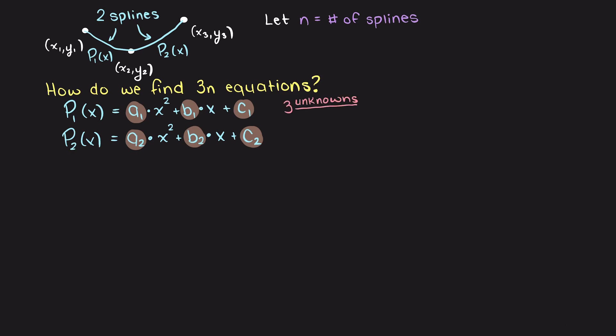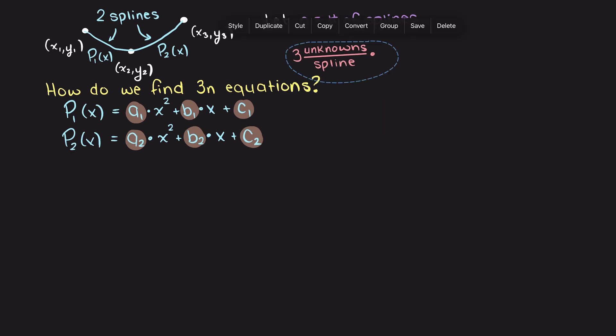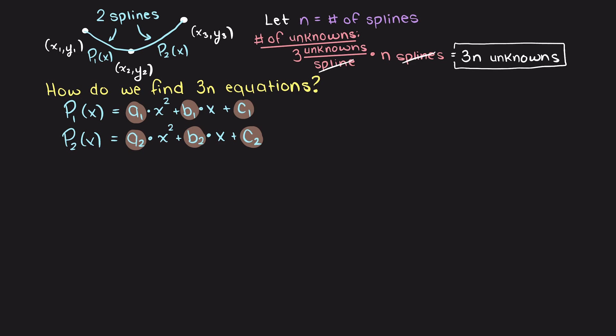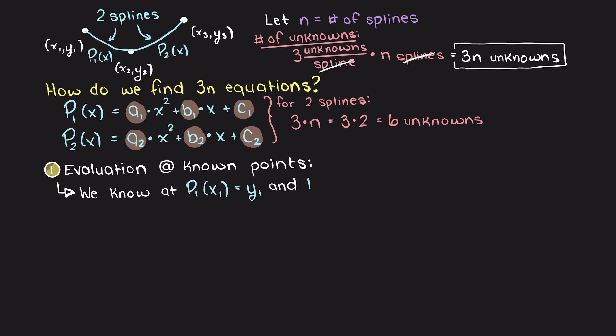So, how do we go about finding 3n worth of equations? Well we need to find them by being clever and understanding our system more. Firstly, we know that at every x data point we are given, we know the y value associated with it. So, for example, if we plug either x1 and x2 into p1 of x, well we know we are going to get y1 and y2 back respectively, and there is two equations right there.